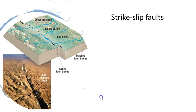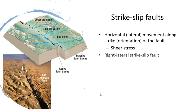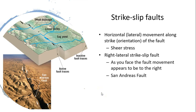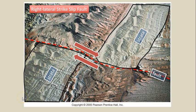Strike-slip faults involve horizontal movement along the strike or compass direction of the fault. They are the result of shear stress and are classified as right lateral or left lateral. With right lateral strike-slip faults, movement of objects on the other side of the fault appears to be to the right — the San Andreas fault in California is maybe the most famous right lateral strike-slip fault. If objects on the other side appear to have moved to the left, the fault is called a left lateral strike-slip fault. Here's a photograph from a plane flying over a right lateral strike-slip fault that has offset a formation of strata in Death Valley National Park.